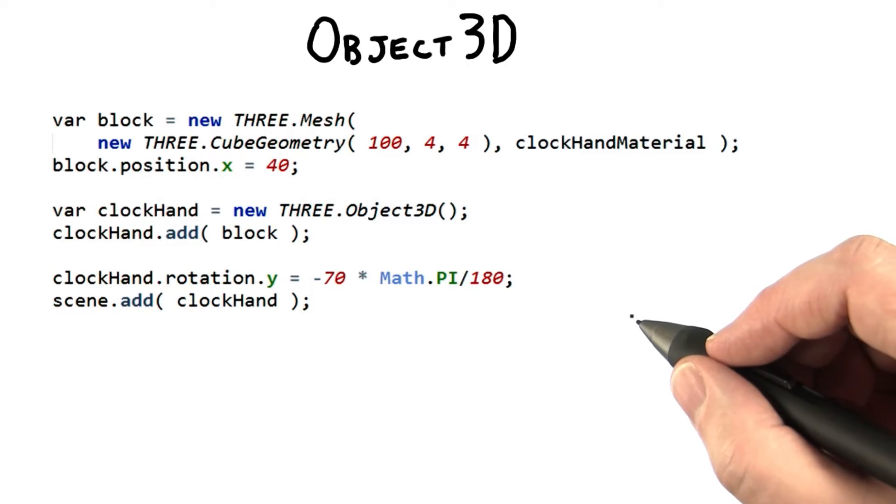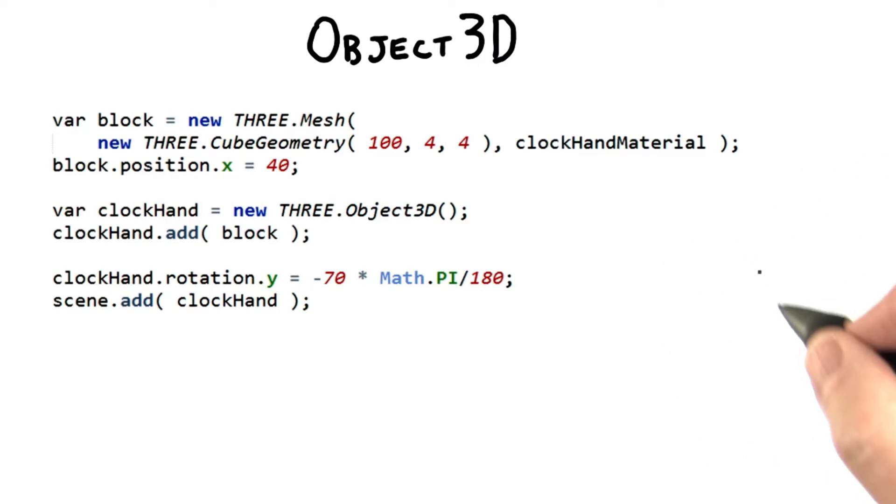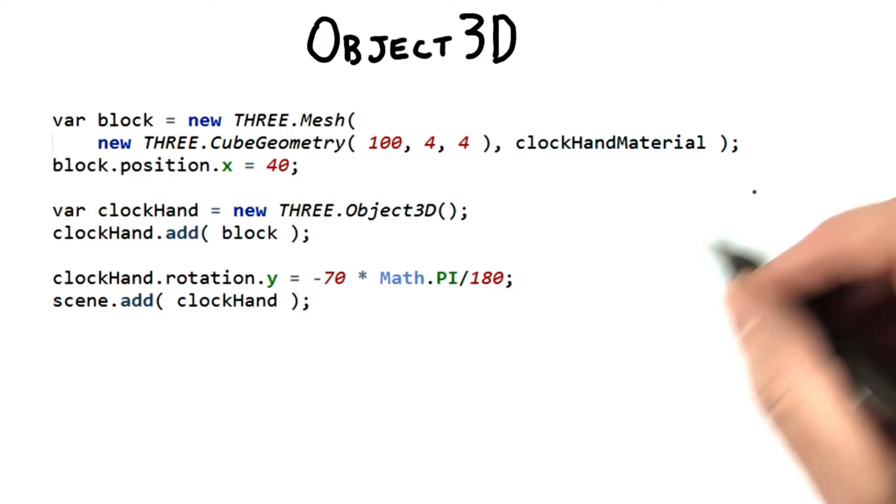We've seen that Three.js can't easily let us position and then rotate the hand of a clock in place. The problem is that Three.js rotates, then positions, when we'd like to do these in the opposite order.